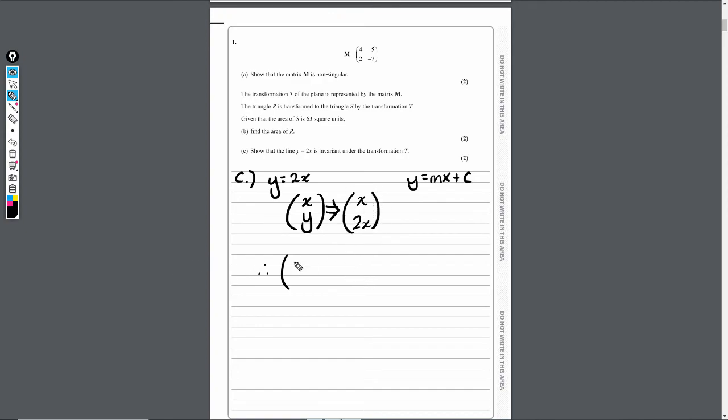So if we do that now, that's going to be 4, minus 5, 2, minus 7, and then multiply it by this, X, 2X. So doing this now, I'm going to get 4 times X, that's 4X, minus 5 times 2X, that's going to be minus 10X, so multiplying that row here by that column. And then finally, we're going to do this row by this column. So 2 times X, 2X, and then minus 7 times 2X, that would be minus 14X.